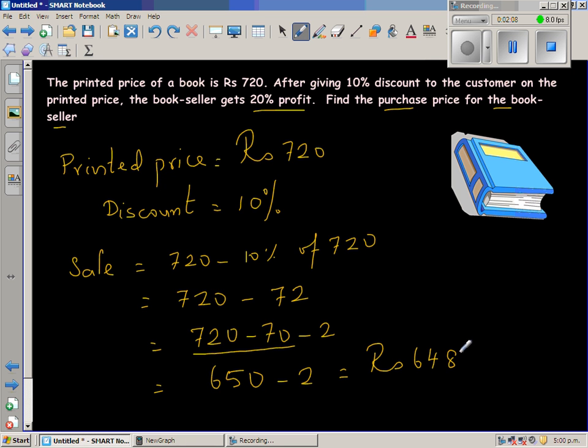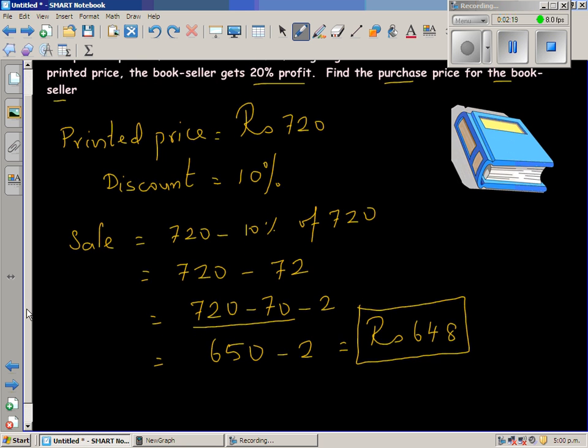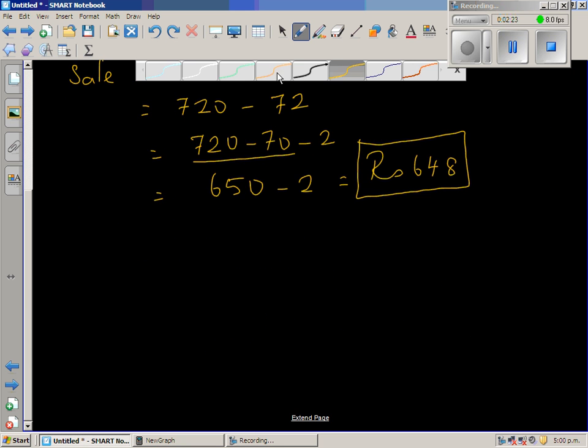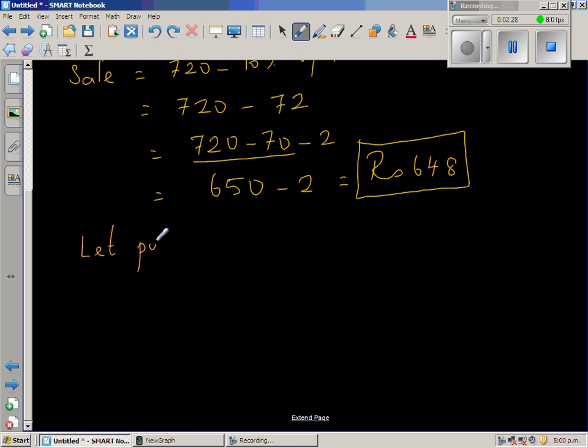Okay, now even when the bookseller is selling at this price, he's having a profit of 20%. So the question is, you want to find the purchase price. We're going to do a little algebra here. Let the purchase price of the book be x.